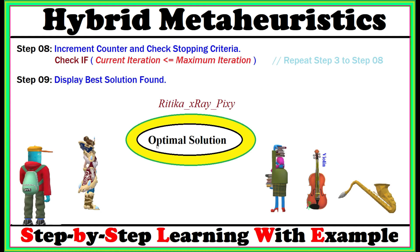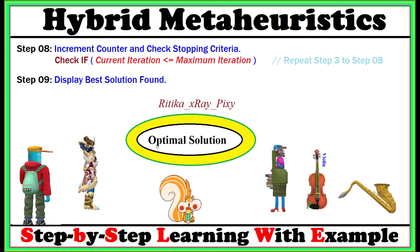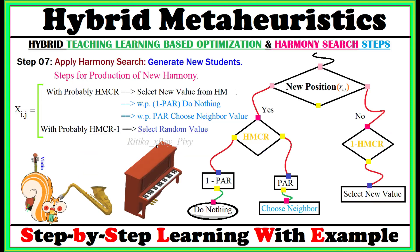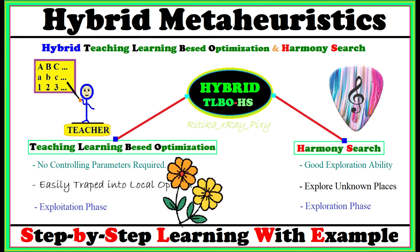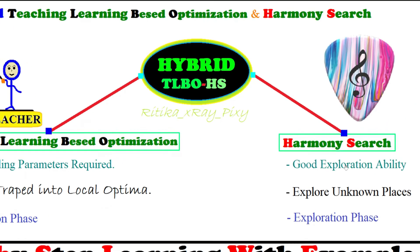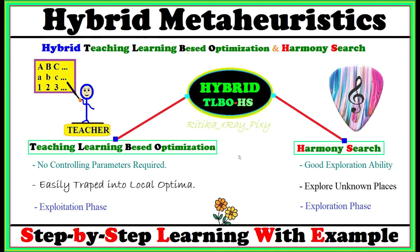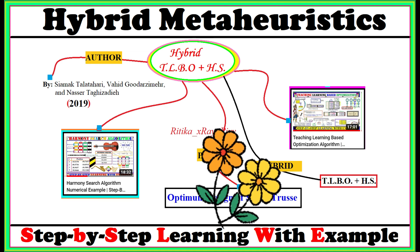After that, we increment the counter and check the stopping criteria: whether the current iteration is less than or equal to the maximum iteration. If the stopping criteria is matched, we stop and display the optimal solution. If not matched, we repeat the loop from step 3 to step 8. This is the complete hybrid teaching learning based optimization algorithm — combining the merits of TLBO and harmony search to overcome TLBO's tendency to get stuck in local optima, applied to solve the optimum design of space trusses.